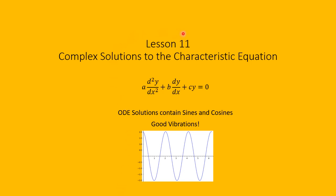Hello. This is lesson 10. We handle the case of complex solutions to the characteristic equation. We're still looking at this homogeneous, second-order, constant-coefficient, linear differential equation. And what we'll find is if the characteristic equation has complex solutions, then the solution to this differential equation will involve sines and cosines.